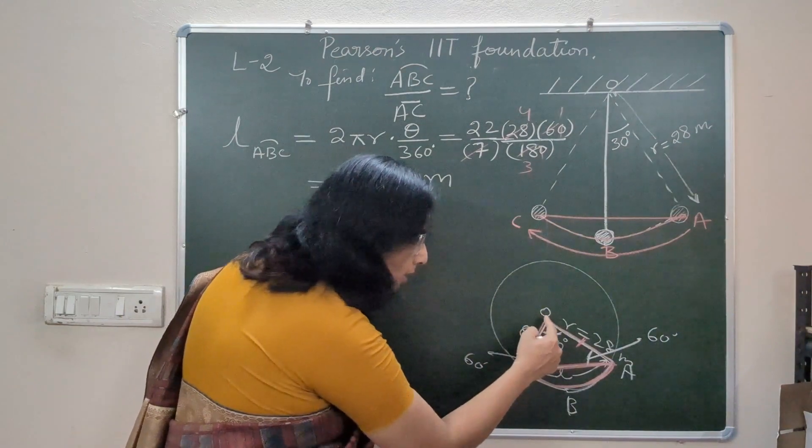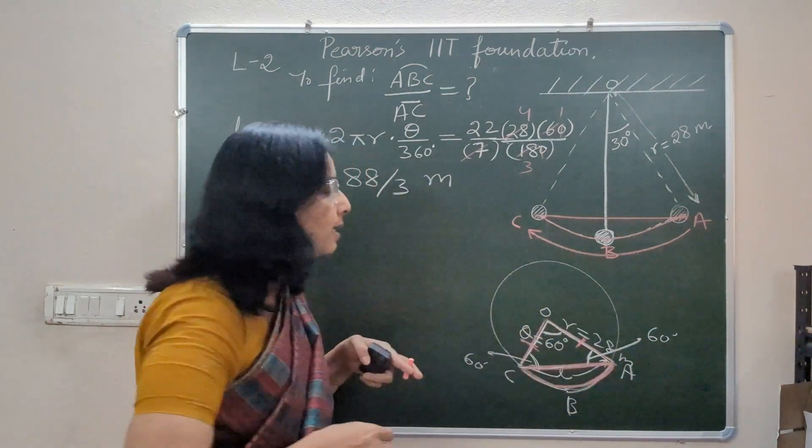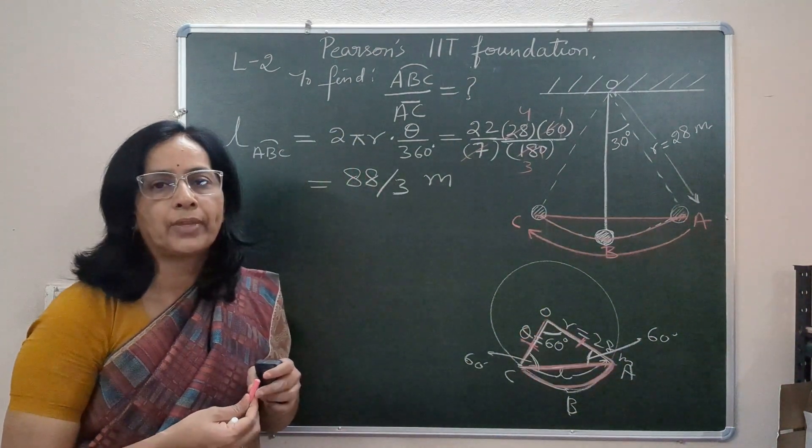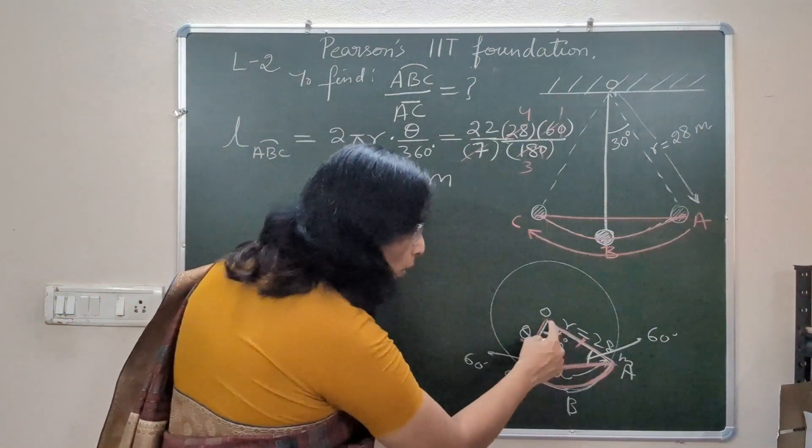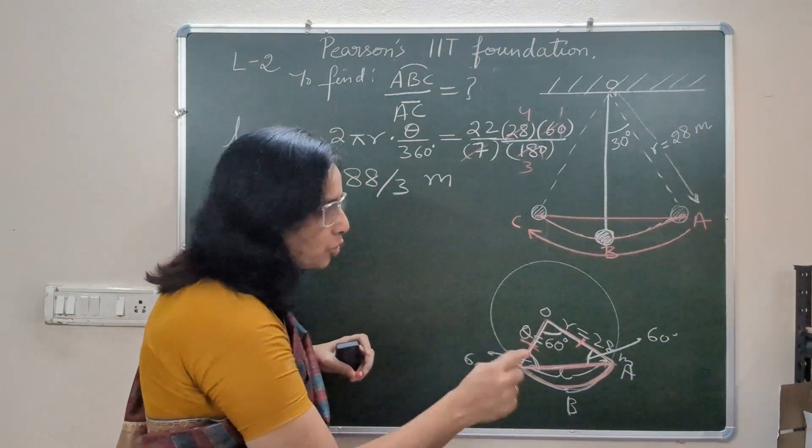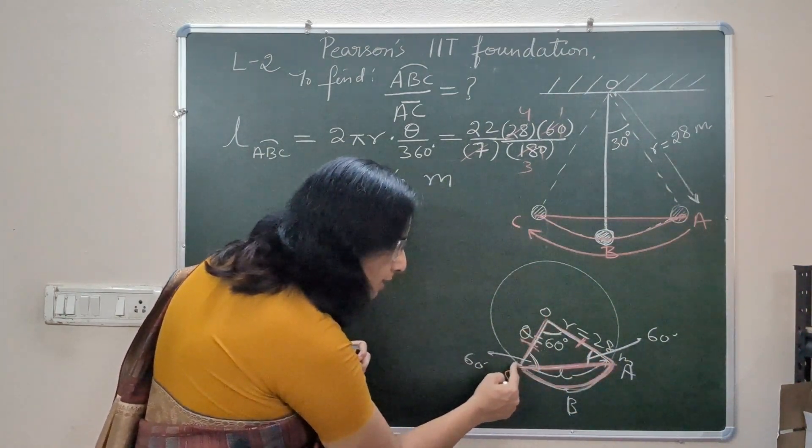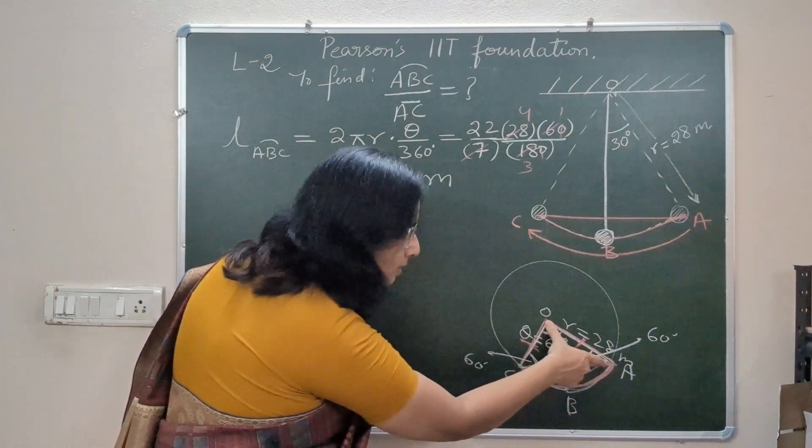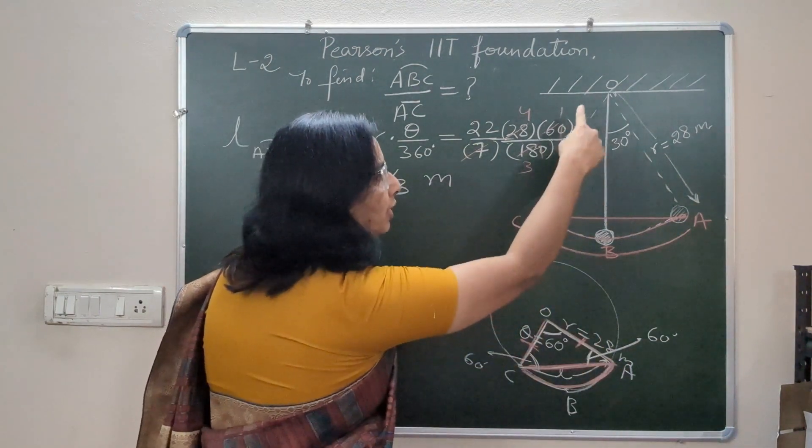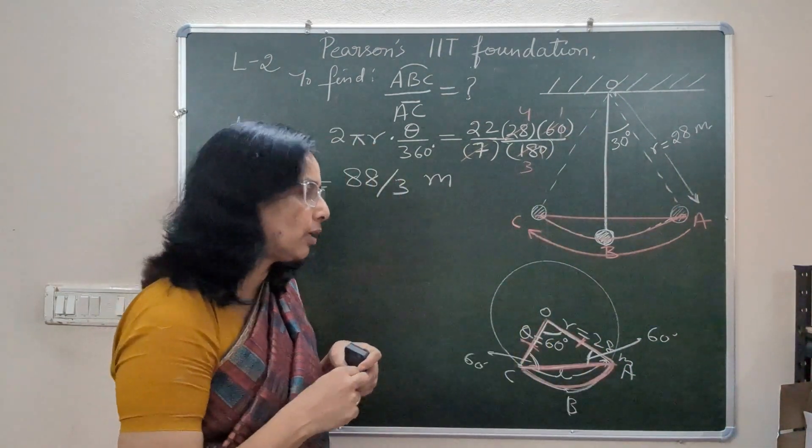So this angle is also 60 degrees and this angle is also 60 degrees. Its meaning is triangle OAC is an equilateral triangle. And if it is an equilateral triangle, all three sides should be the same length. Since OA is 28 and OC is 28, both of them radius, in this case both of them length of the string of the pendulum.